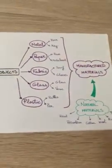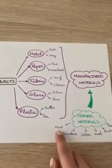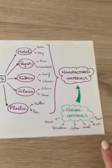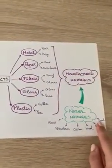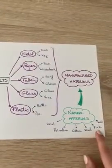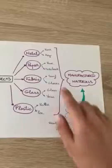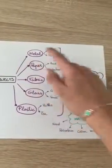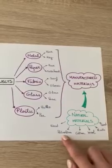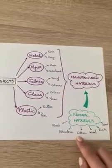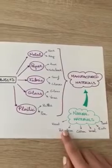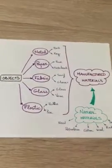For example, we use wood to make paper, or we use sand to make glass. As well, we use rocks to make metal. Wool and cotton and petroleum as well to make fabric. And we also use petroleum to make plastic.